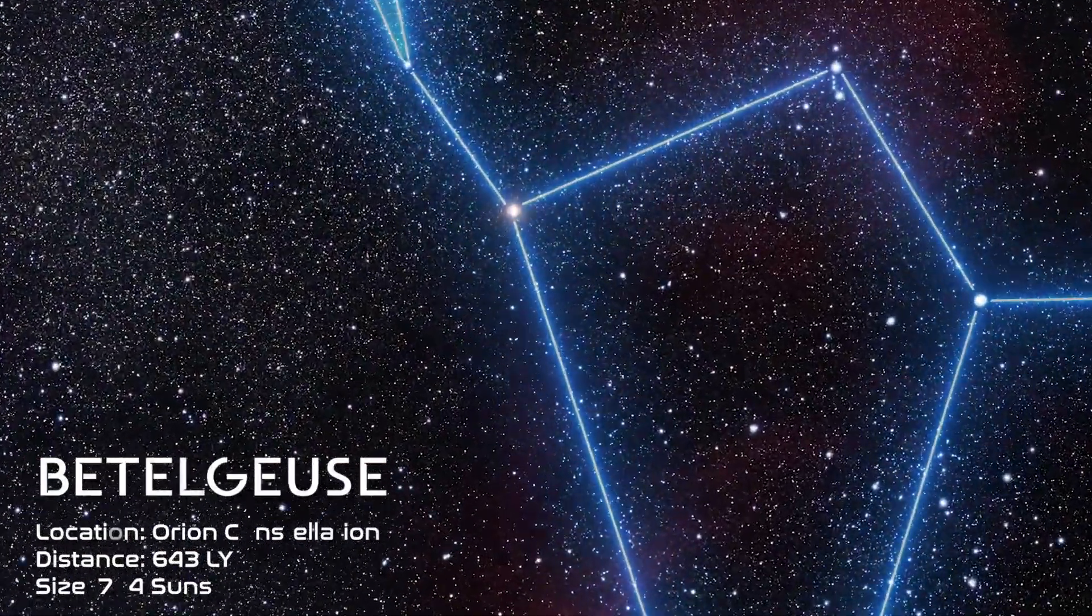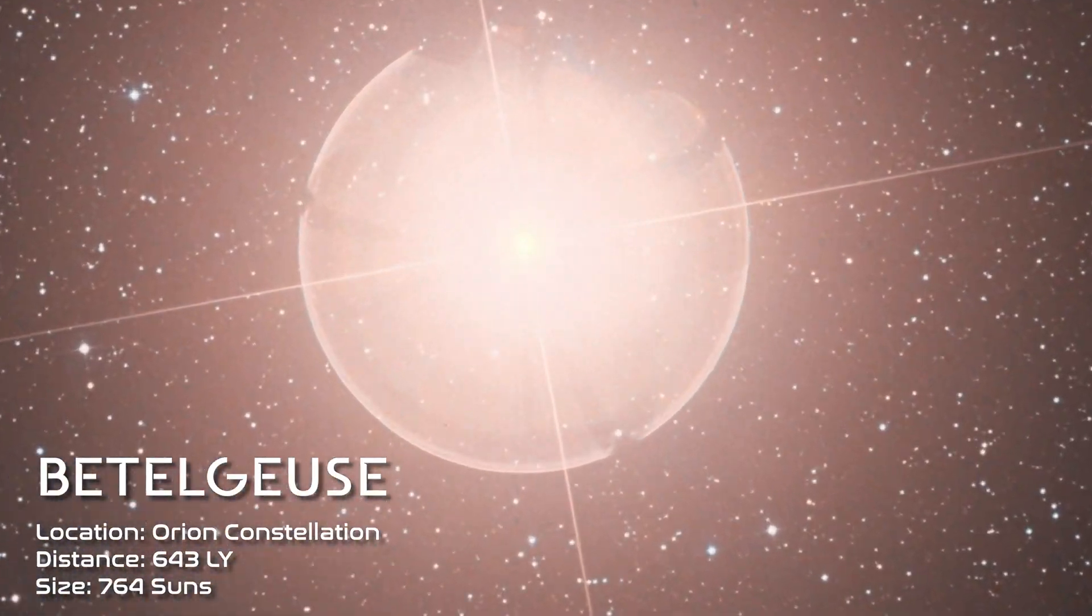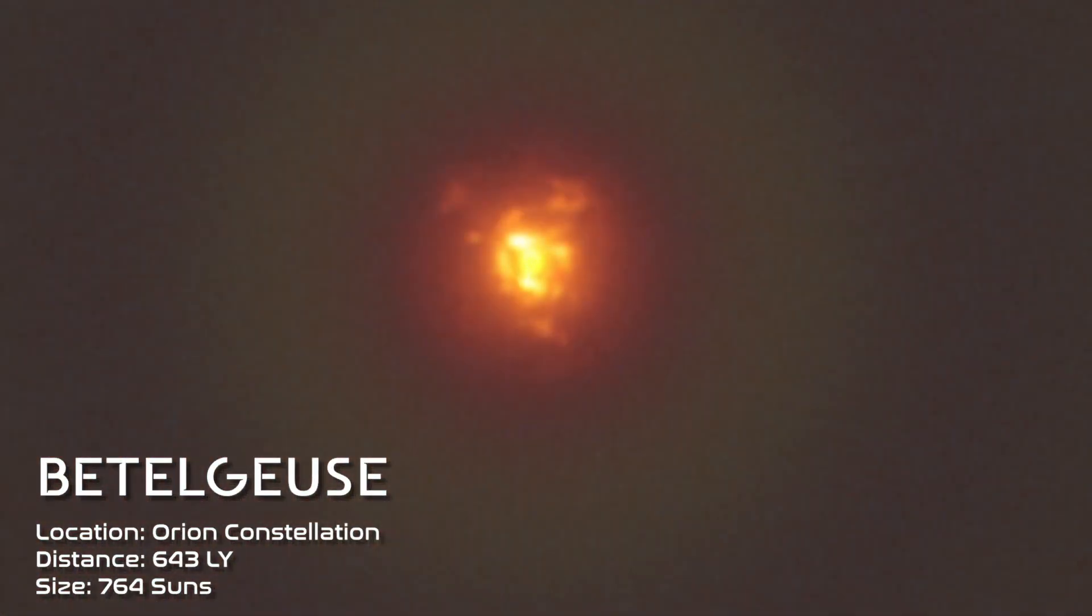A neighboring red supergiant located 600 light-years away from Earth by the name of Betelgeuse has been exhibiting unusual signs of its impending death for a little while now.